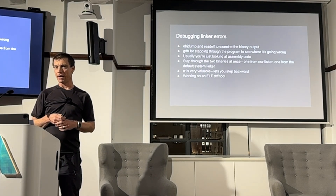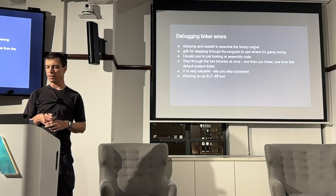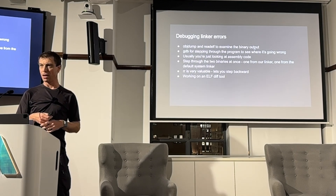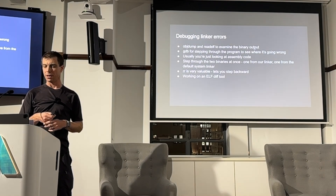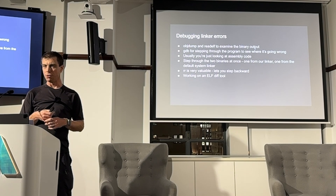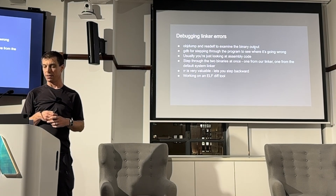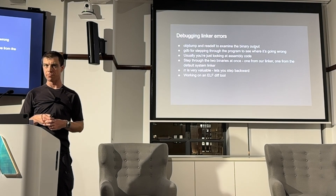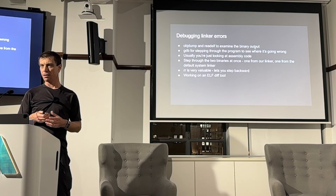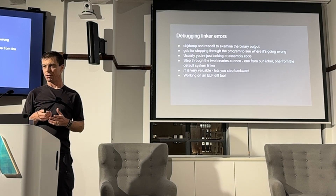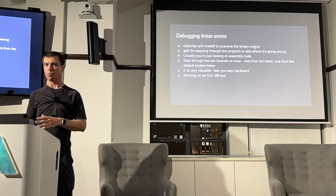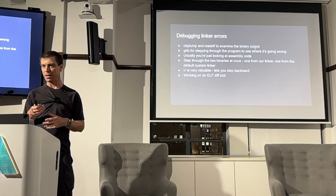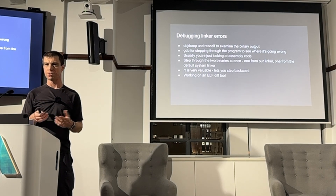When the linker gets something wrong it can be pretty hard to work out what the problem is. Two really useful tools are objdump and readelf, which you can use to examine both the input files and the output file. GDB is useful for stepping through the program to see where it's getting something wrong — usually you're just looking at the assembly code. I'll typically take the output from the system linker GNU-LD and use that as a reference, stepping through both outputs in parallel to see where they diverge. Whenever I'm using GDB I'm almost always using it via Mozilla's RR, which is a replay debugger — incredibly useful because it lets you step not only forwards but backwards. I've also been working on a tool to diff ELF files, which can allow me to figure out the significant differences between two files even though they have completely different layouts.